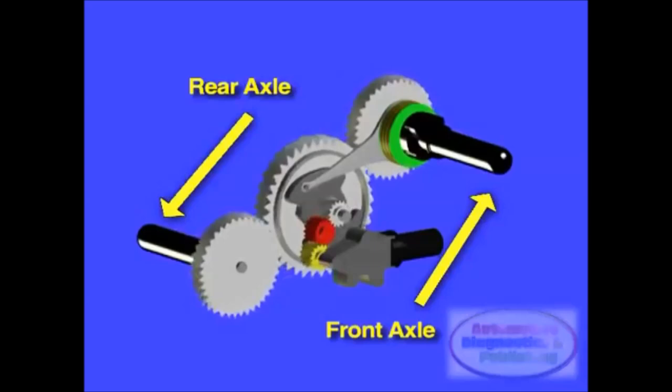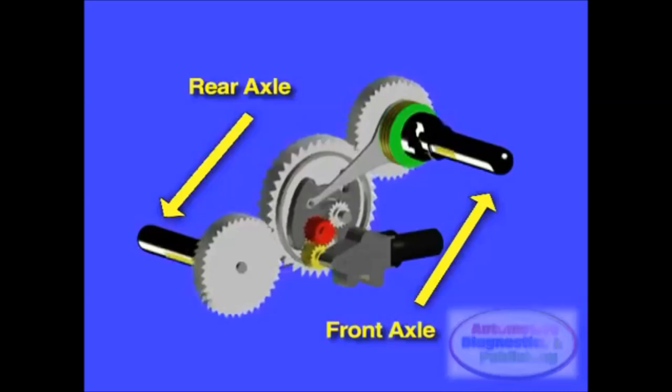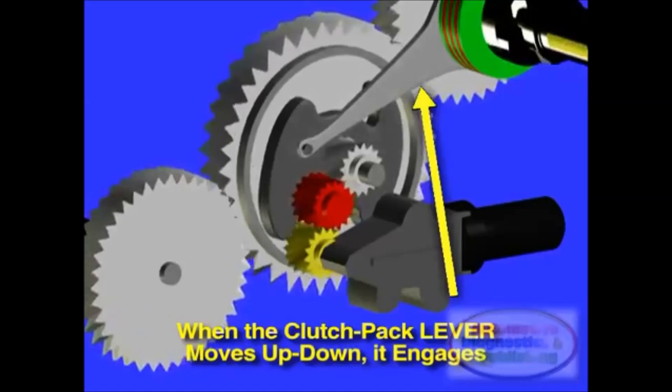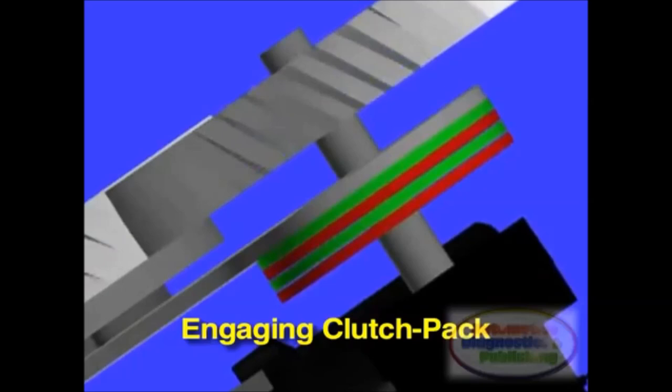X-Drive allows power to be split between the front and rear axles through use of a multi-plate clutch located between the gearbox and the drive shaft. This setup allows X-Drive vehicles to split power in virtually any way it pleases. Torque can be transferred to the front wheels via electronically controlled multi-plate clutch that is located in the transfer case. X-Drive does not have a center differential.